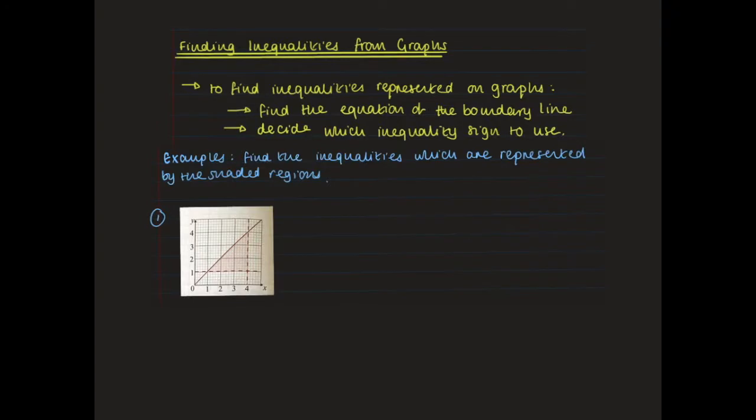Today we're going to be looking at finding inequalities already drawn on a graph and finding inequalities that a shaded region satisfies. To find inequalities represented on graphs, we need to find the equation of each boundary line and then decide which inequality sign to use. The best way to go about this is to look at it through an example.